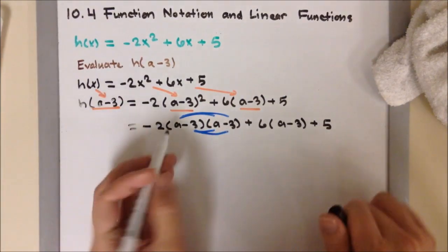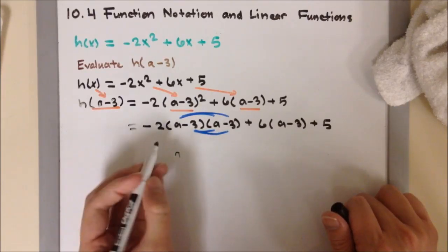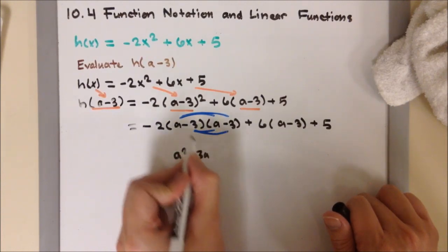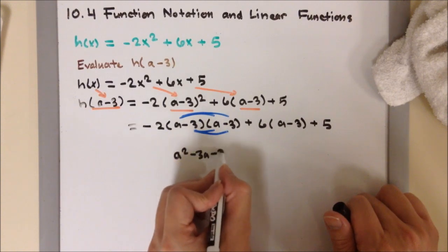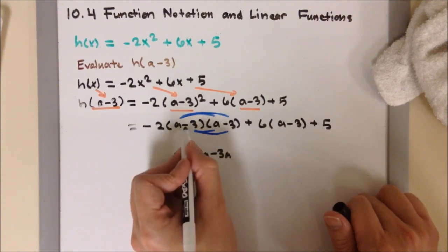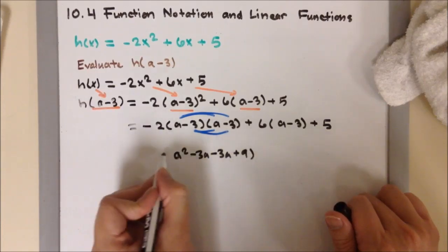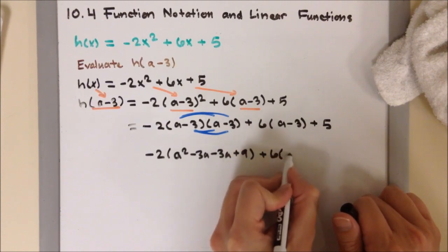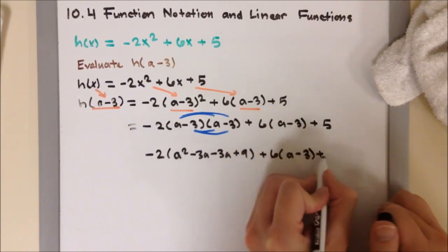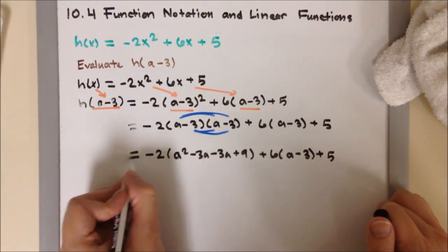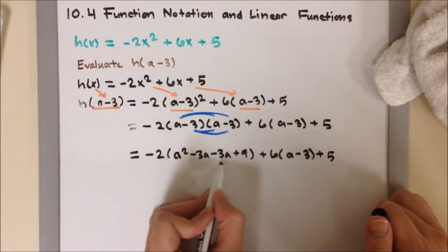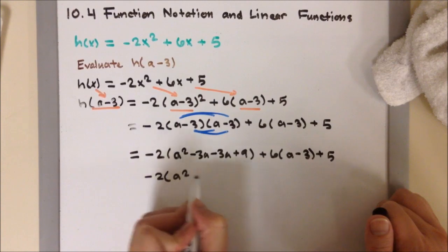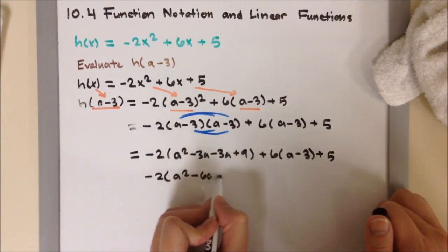So as you can see, I drew my blue lines. I'm going to do A times A, which is A square. A times minus 3 will be minus 3A. Minus 3 times A will also be minus 3A. And then minus 3 times minus 3 will be a positive 9. And then I'm bringing down everything else. I'm still simplifying inside this parenthesis. Here I can combine like terms. So I'm going to have negative 2 times A square minus 6A plus 9.